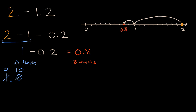Another way to think about this — and the whole point is to see multiple strategies and realize they all get you to the same place — is to ask: what's the difference between two and 1.2? So 1.2 sits here on the number line. How many tenths do you have to add to one and two-tenths to get to two? If you've already got two-tenths, you need to add another eight-tenths to get to the next whole. So the difference between two and 1.2 is equal to 0.8.